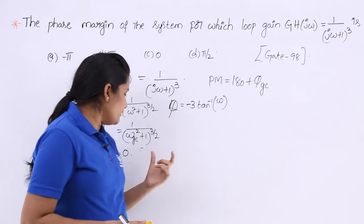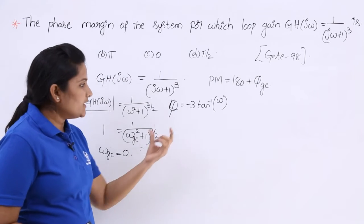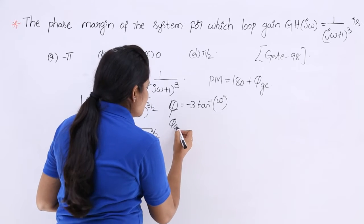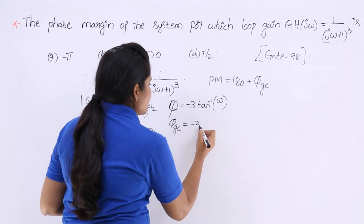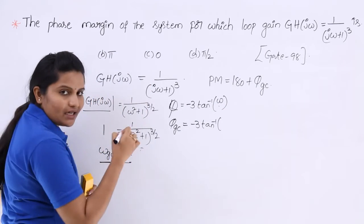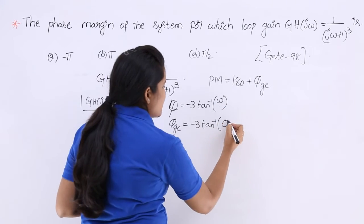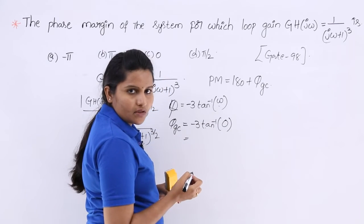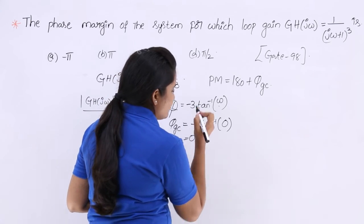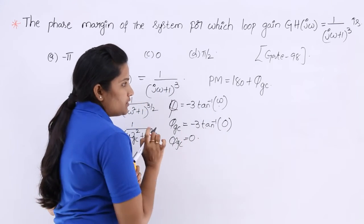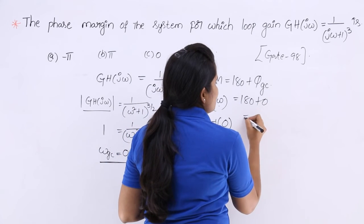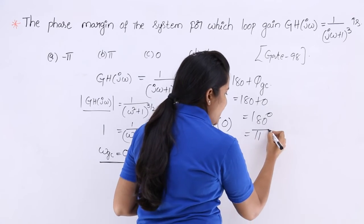Now we find the phase at the gain crossover frequency. φgc = −3·tan⁻¹(ωgc) = −3·tan⁻¹(0) = −3 × 0 = 0. Substituting into the phase margin formula: Phase Margin = 180 + 0 = 180 degrees, which equals pi.